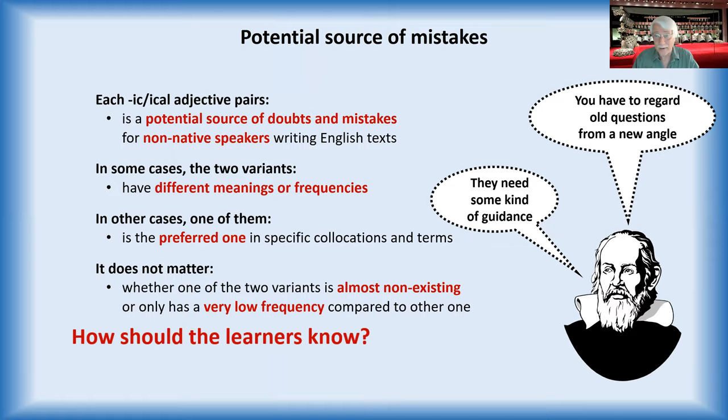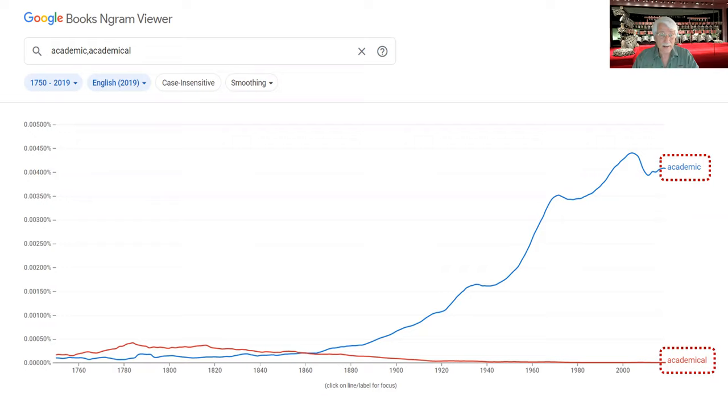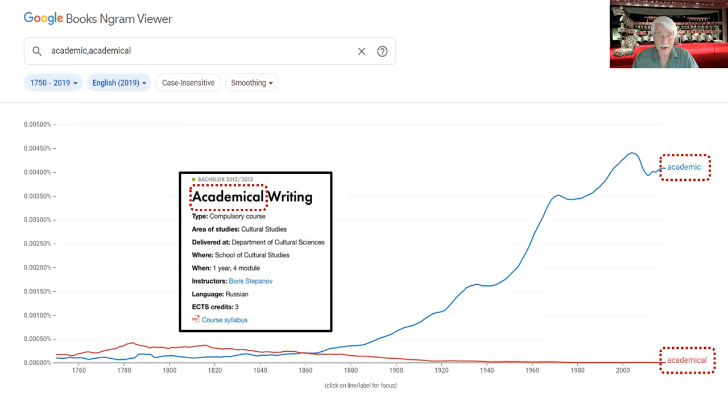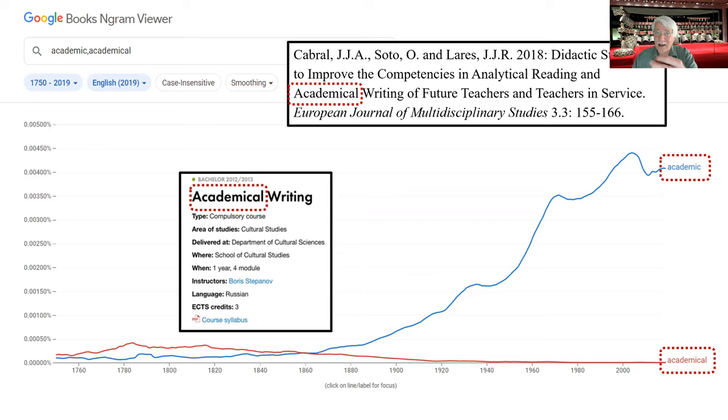Now we'll see two words, academic and academical. We'll see academical was the most frequent 200 years ago. Now it's academic and academical doesn't really exist. But here we see a Russian course in academical co-writing from eight years ago. And here we see an article published in a European journal by Mexican authors three years ago, and they also use academical. So it's actually a problem.